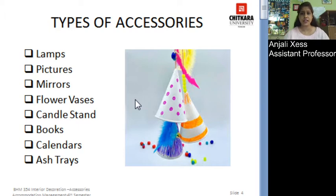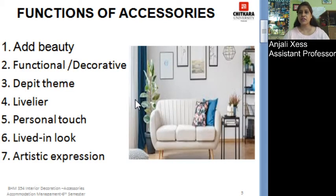There are various types of accessories you can find in your surroundings, in a room, or in a guest room. Examples include lamps, pictures, mirrors, flower vases, candle stands, books, calendars, and ashtrays. One important function of accessories is that it adds beauty to the room. For example, you can see in this picture there are cushions, flower vases, picture frames, and a stand which are adding beauty to this particular room.